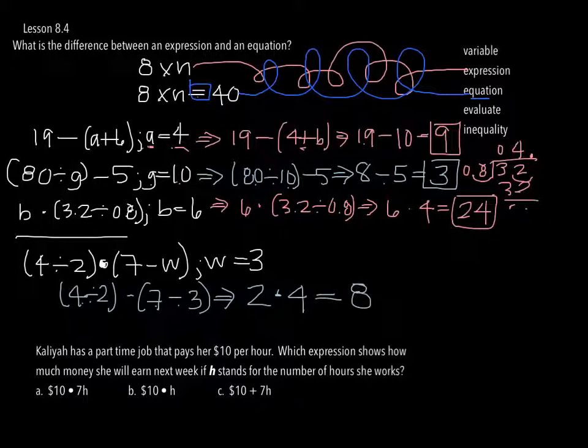Hopefully you got 8 for that one. The next one is, Kalia has a part-time job that pays her $10 per hour, which expression shows how much money she will earn next week if H stands for the number of hours she works? So what we have to figure out is how much she's going to earn an hour. So it's going to be $10, and we're going to multiply that, because that's what she earns per hour. So this one, the question is, where does she get the 7? Where does that 7 come from? I have no idea, as I read through this, where that 7 comes from. So we can probably get rid of this one right away, because we have no idea if she's going to work 7 hours.